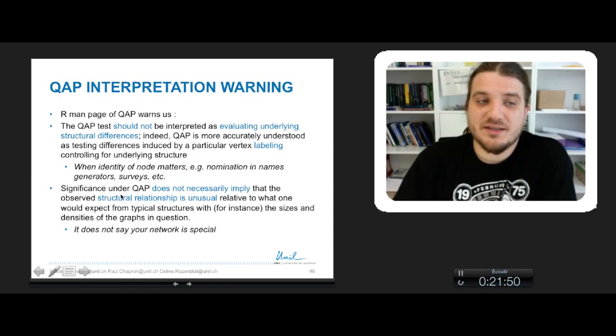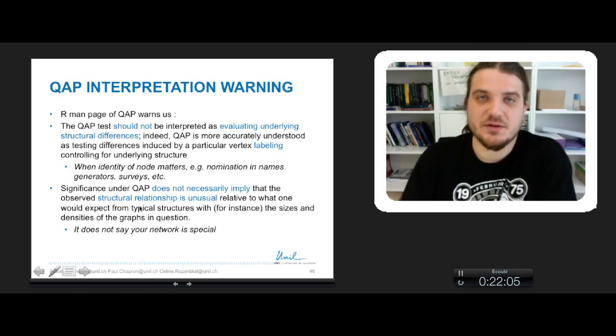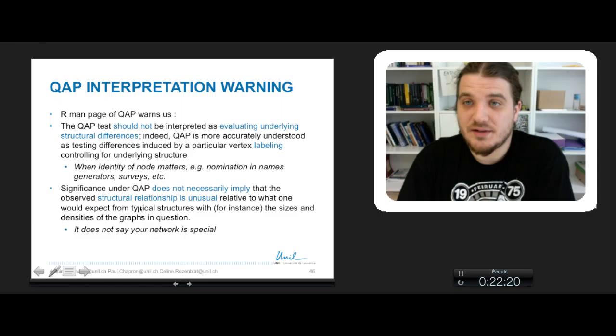The second point is that the significance of QAP test does not imply that your network is very different from any other network with the same global properties, so number of nodes, density, and so on. In fact, it does not say that your network is special. It only uses the different possible labelings to say if it will have an influence on the correlation between two networks.